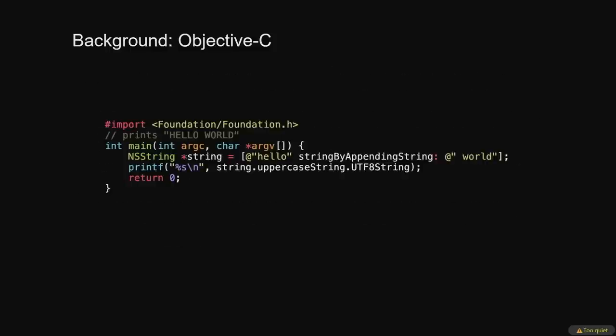Here's a basic Hello World Objective-C program with nearly all the elements we'll care about. We have an NSString — the basic immutable string class — and we call stringByAppendingString, a method on the string 'hello' with the argument 'world', to get the NSString 'hello world'. We can then use the key path string.uppercaseString.utf8String to get a C string pointer, which we can print with printf. The @ signs in front of quotes are just an easy way to create constant NSStrings.